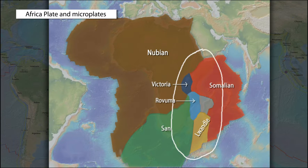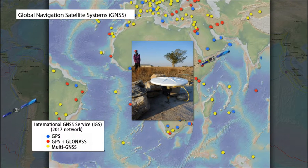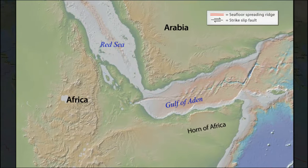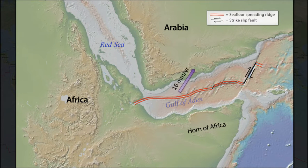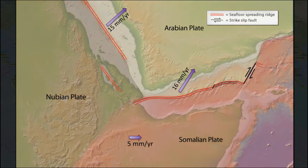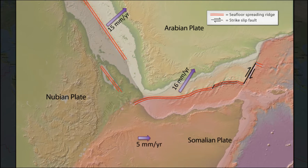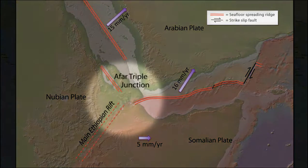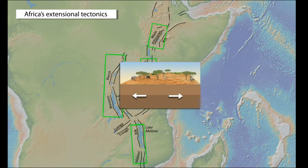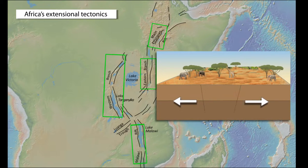Observations from both earthquakes and the global navigation satellite systems have greatly advanced our understanding of tectonics in this region. Let's begin by examining how Arabia is splitting away from Africa. In the Gulf of Aden, seafloor spreading separates the Arabian Plate from the Horn of Africa. In the Red Sea, spreading moves the Arabian Plate away from northern Africa. The differences in direction and rate of seafloor spreading require 5 mm per year of eastward motion of the Somalian Plate away from the Nubian Plate across the main Ethiopian Rift. This rift and the two spreading ridges meet at the Afar triple junction. The main Ethiopian Rift is the northern part of the East African Rift system, dominated by extension with normal faults that produce horst and graben structures.